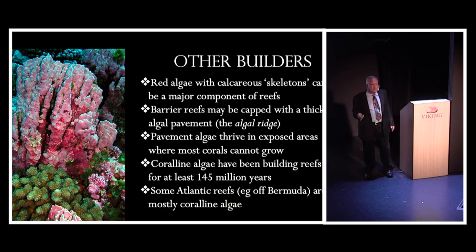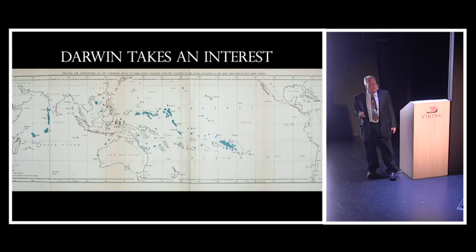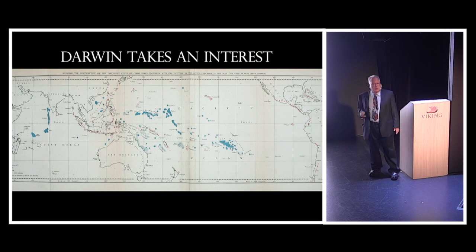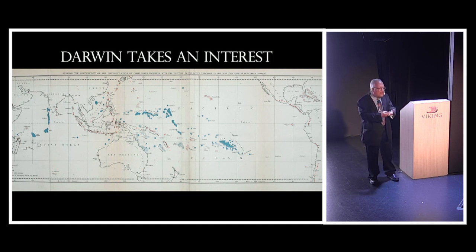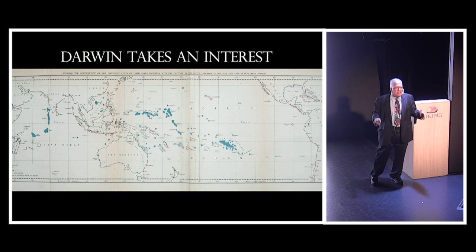One scientist very interested in this back in the mid-19th century was Charles Darwin. Darwin had traveled around the world on his voyage of the Beagle and investigated a good many reefs. He was puzzled as to how some of these reefs could form — particularly how you could have reefs out in the middle of the ocean. Corals need to be near the surface because the algae in the corals have to be able to photosynthesize. So how can a reef form in the very deep ocean where there's practically no light at all?